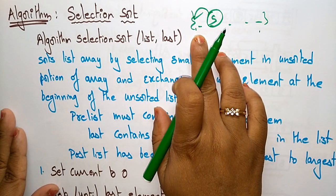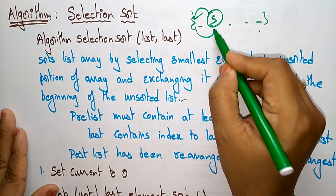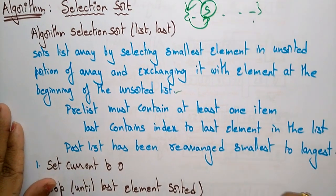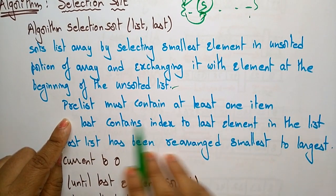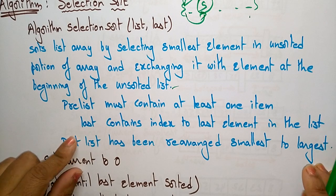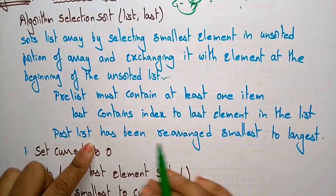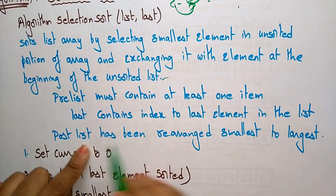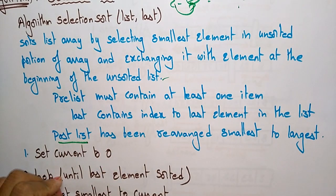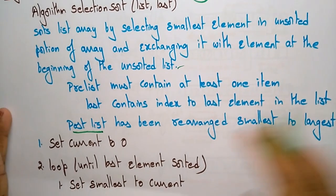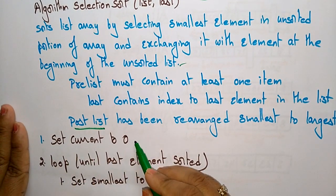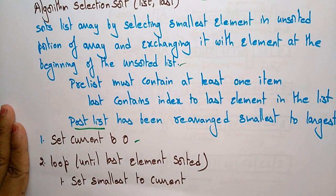The element present at the beginning of the unsorted list should be exchanged. You have to maintain the pre-list — the pre-list must contain at least one item and the last contains the index to the last element in the list. The post-list conclusion is a sorted list rearranged from smallest to largest, meaning in ascending order.